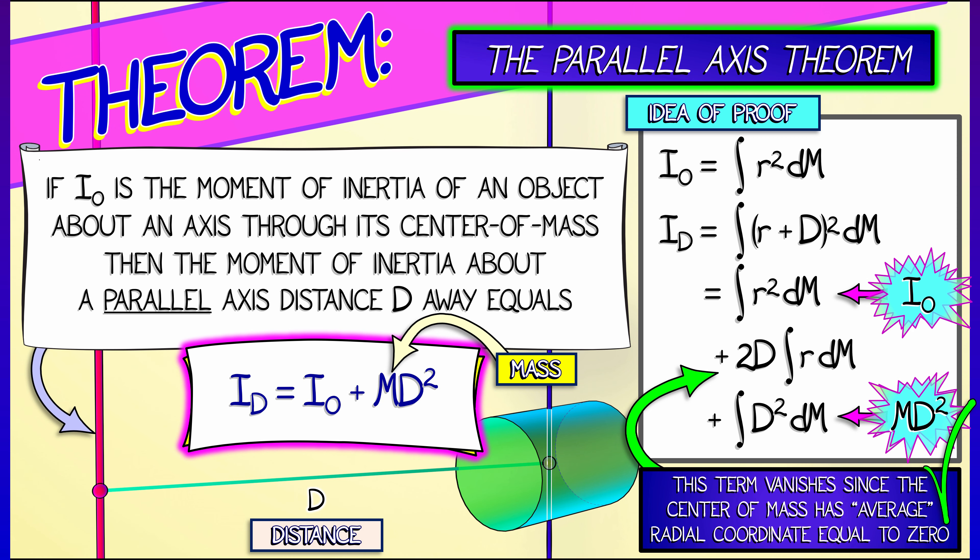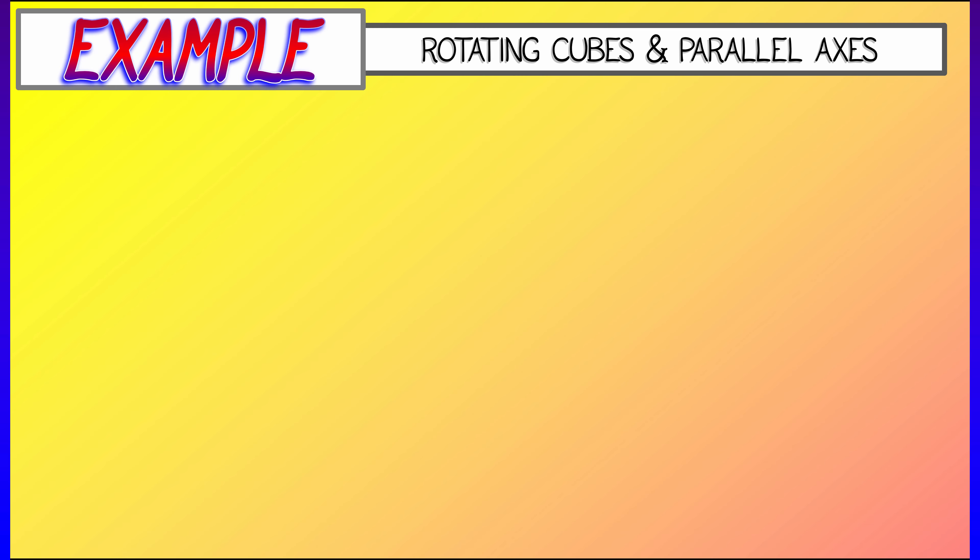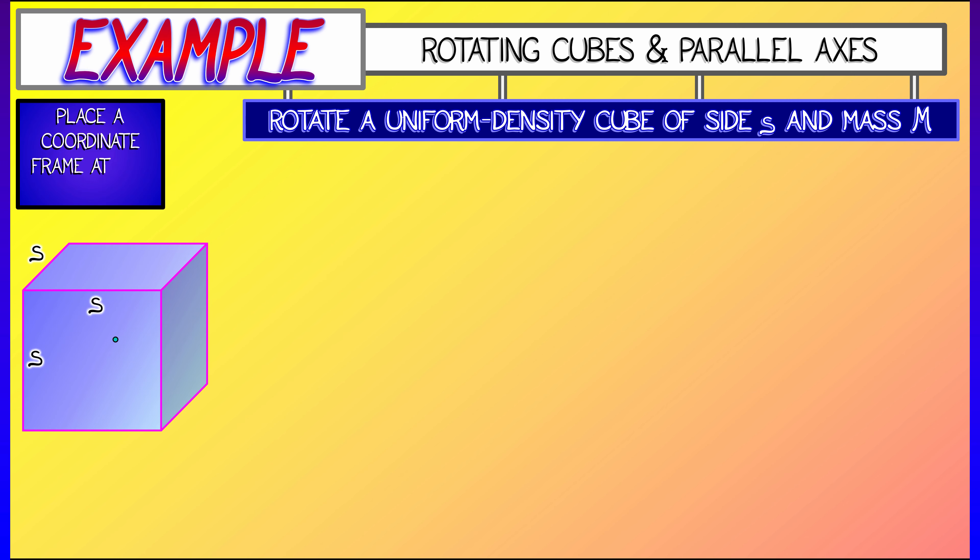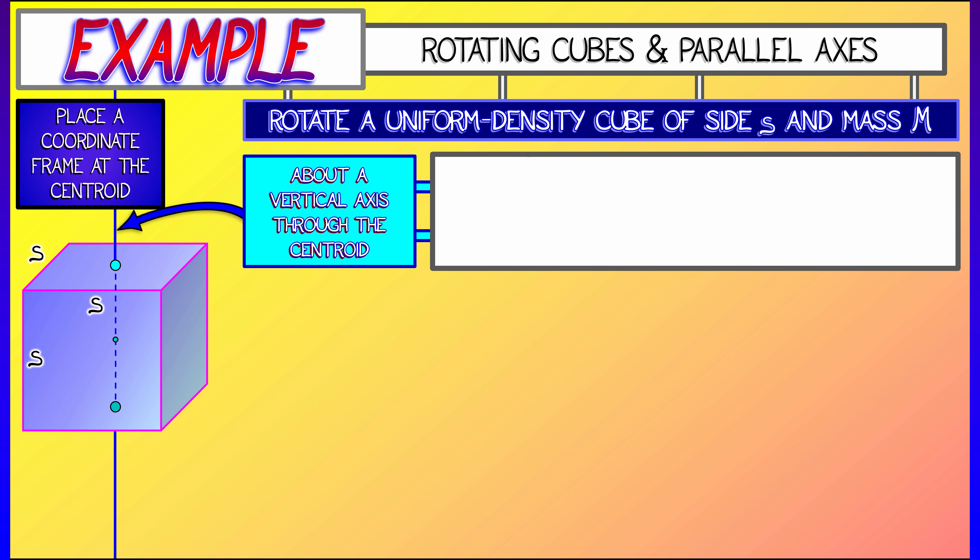You don't have to know the details of the proof so much as you need to know how to use it. So let's practice that. Let's look at a simple case. Let's go back to a uniform density cube, side length s, mass m. Let's say that you're rotating that about a vertical axis through the centroid.